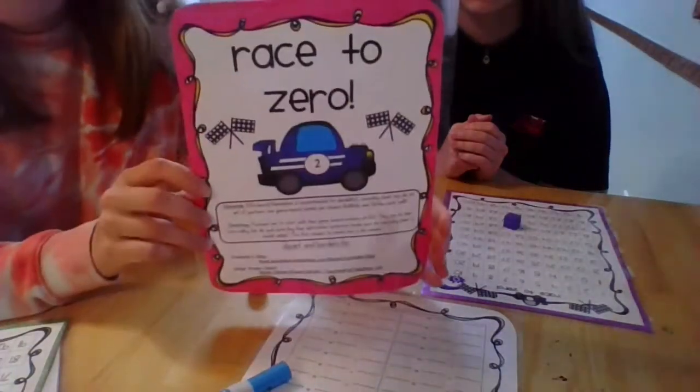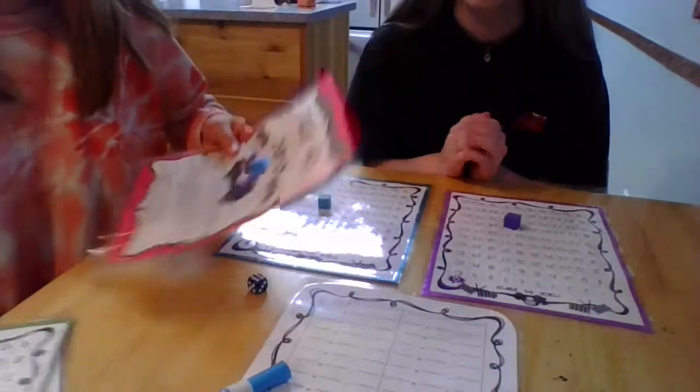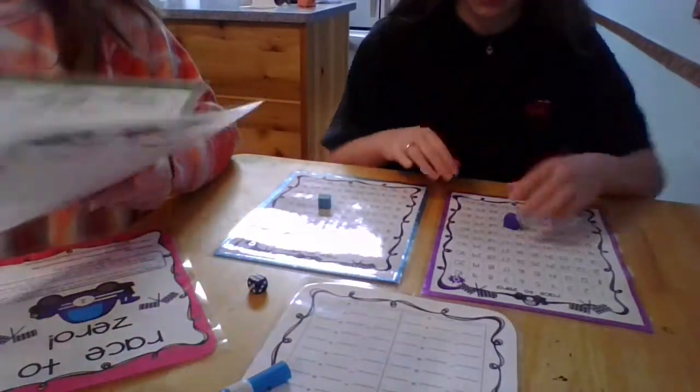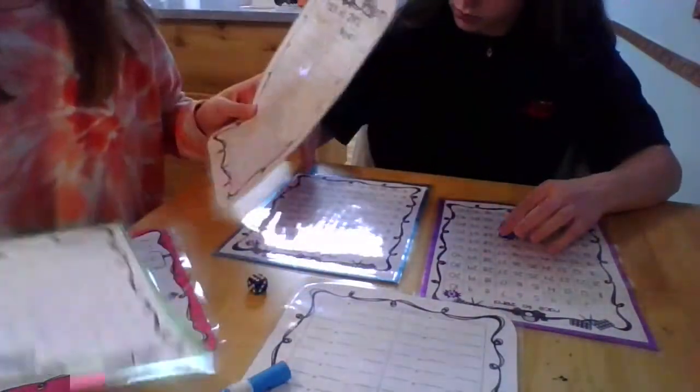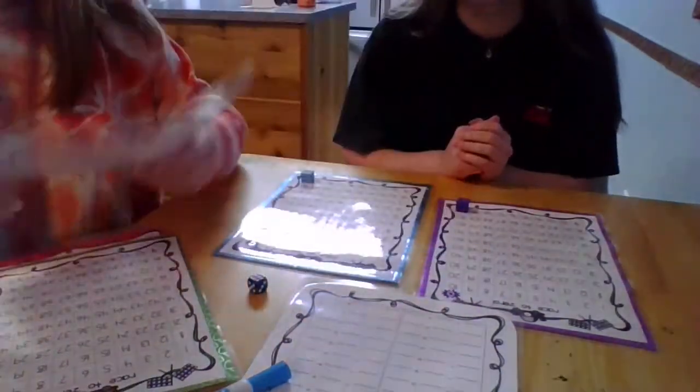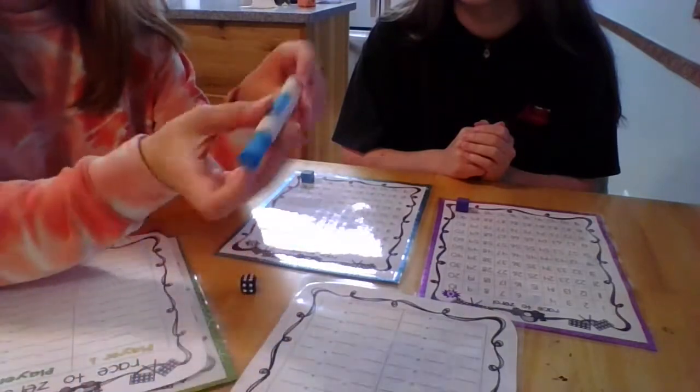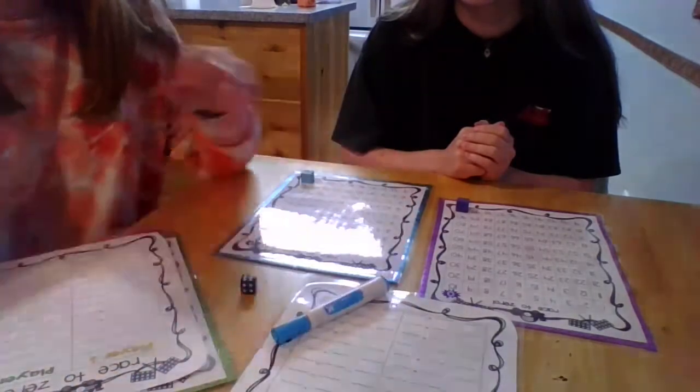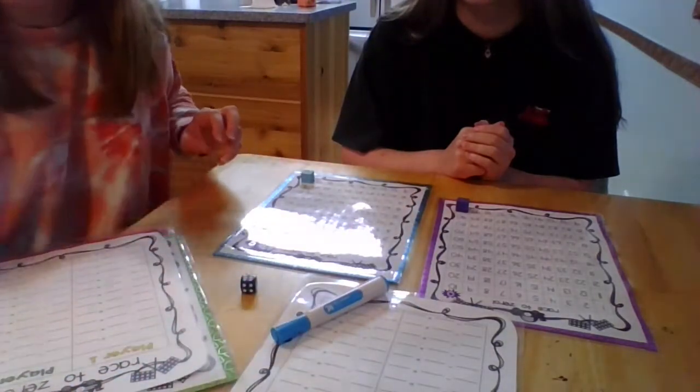Hello, this game is called Race to Zero. For this game you will need your hundreds charts pre-made, your player equation tracking sheets pre-made, a dice, a dry erase board marker, and a calculator. I'll just be using my phone for today.